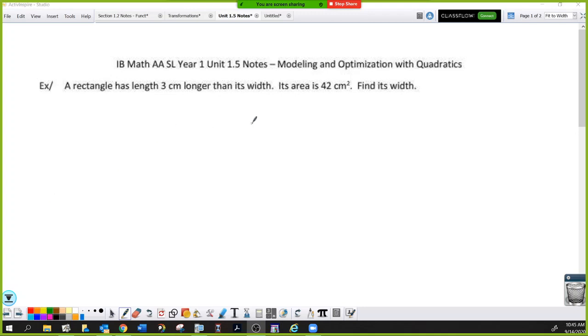Alright, so modeling and optimization. A rectangle has length three centimeters longer than its width, and its area is 42. Find the width. This is like an Algebra 1 question.